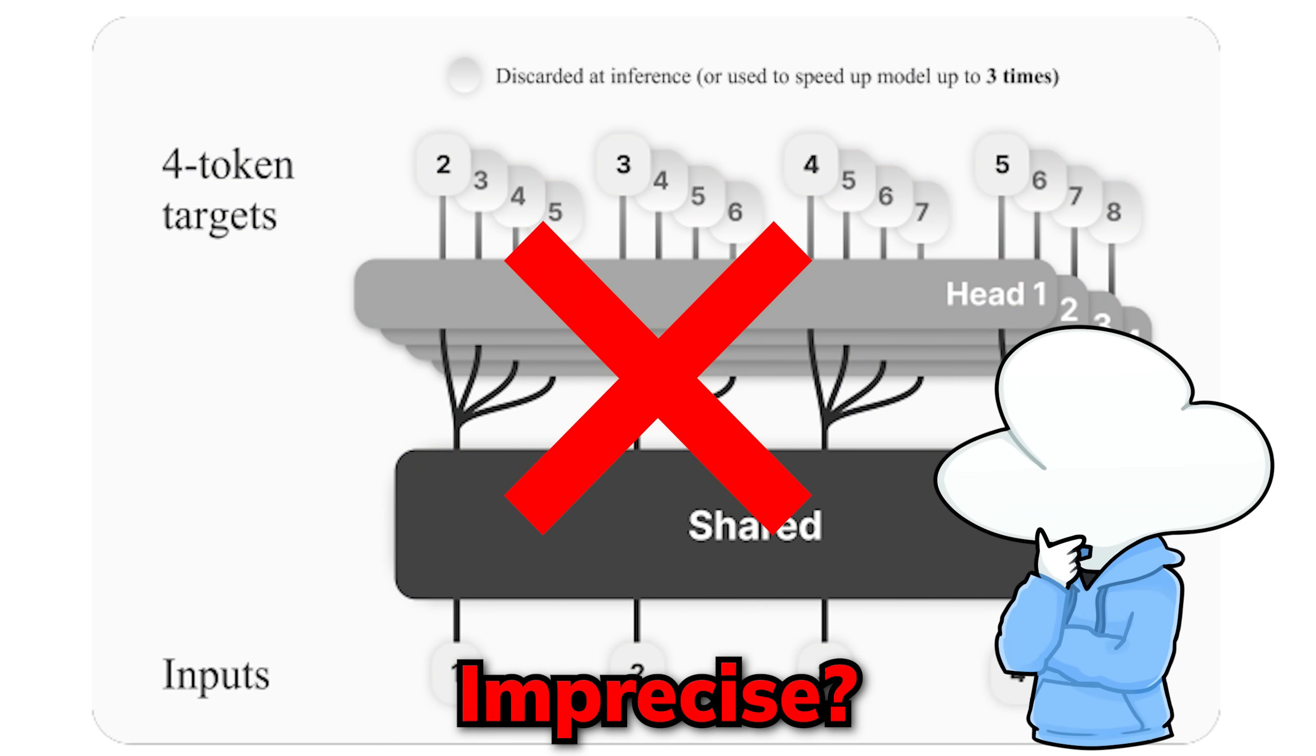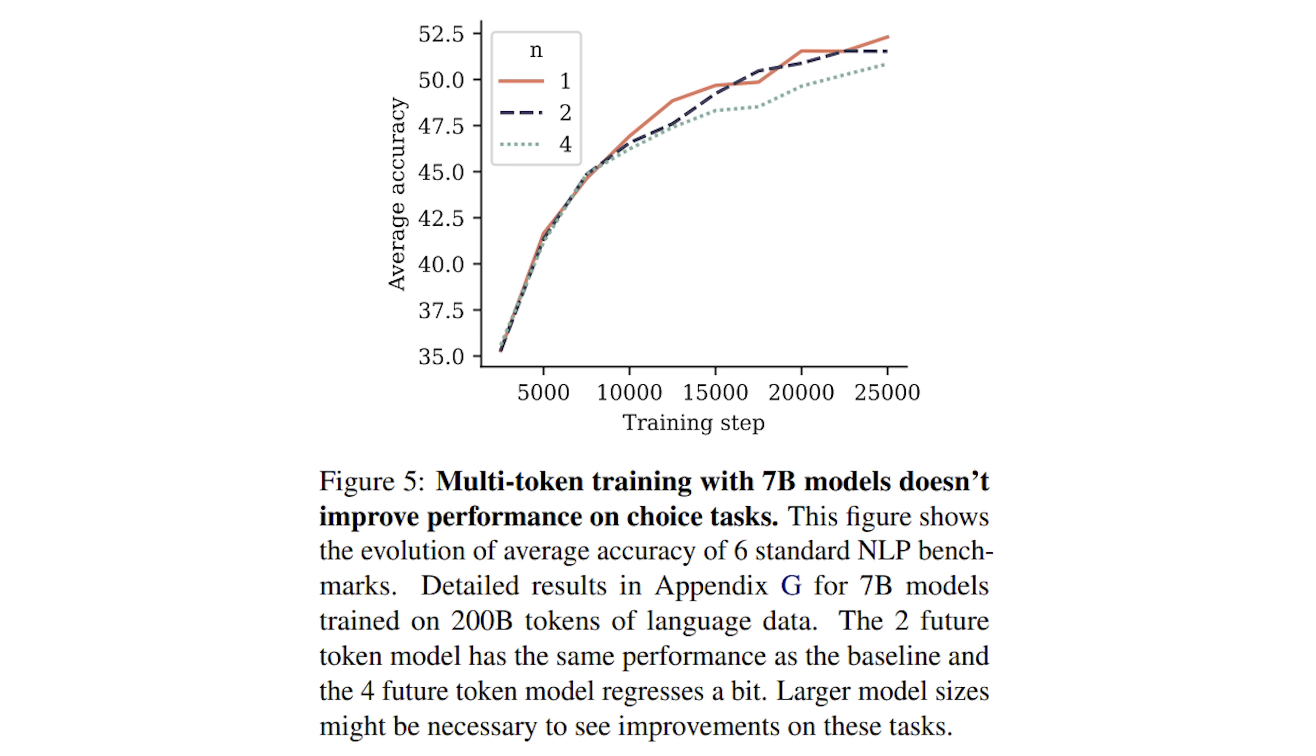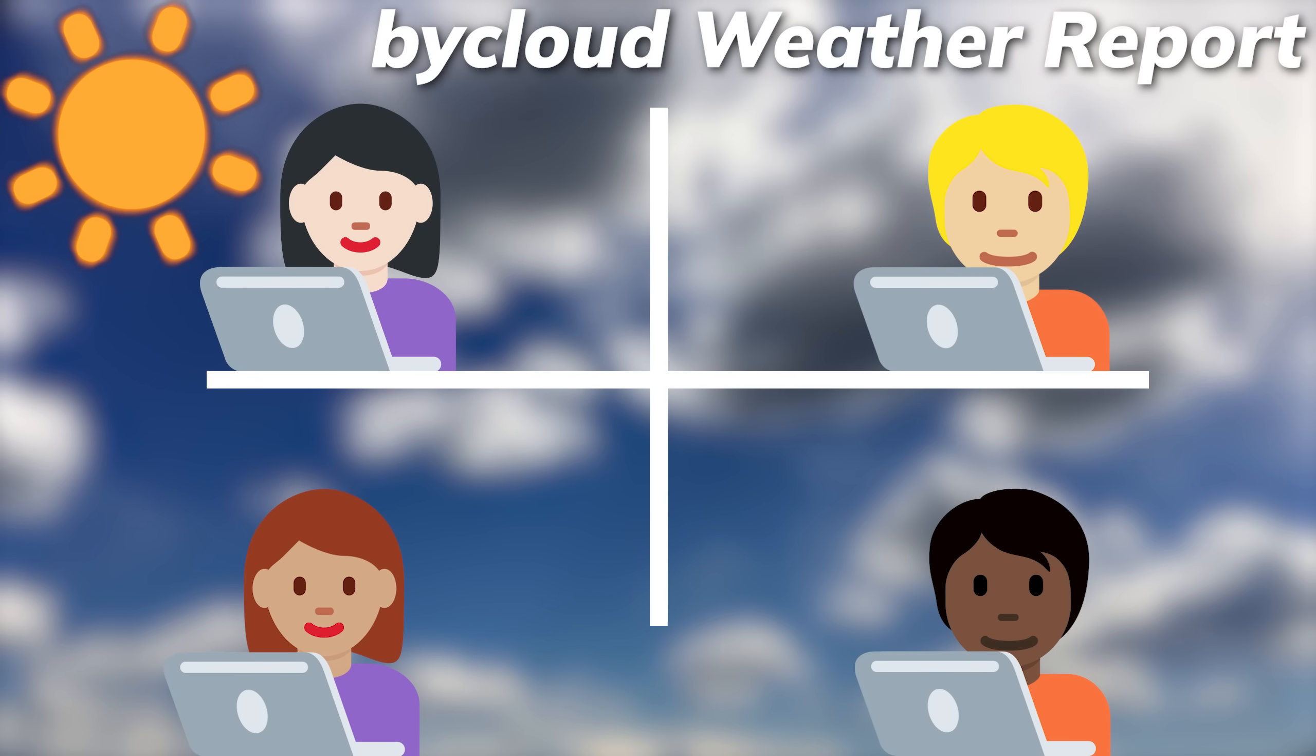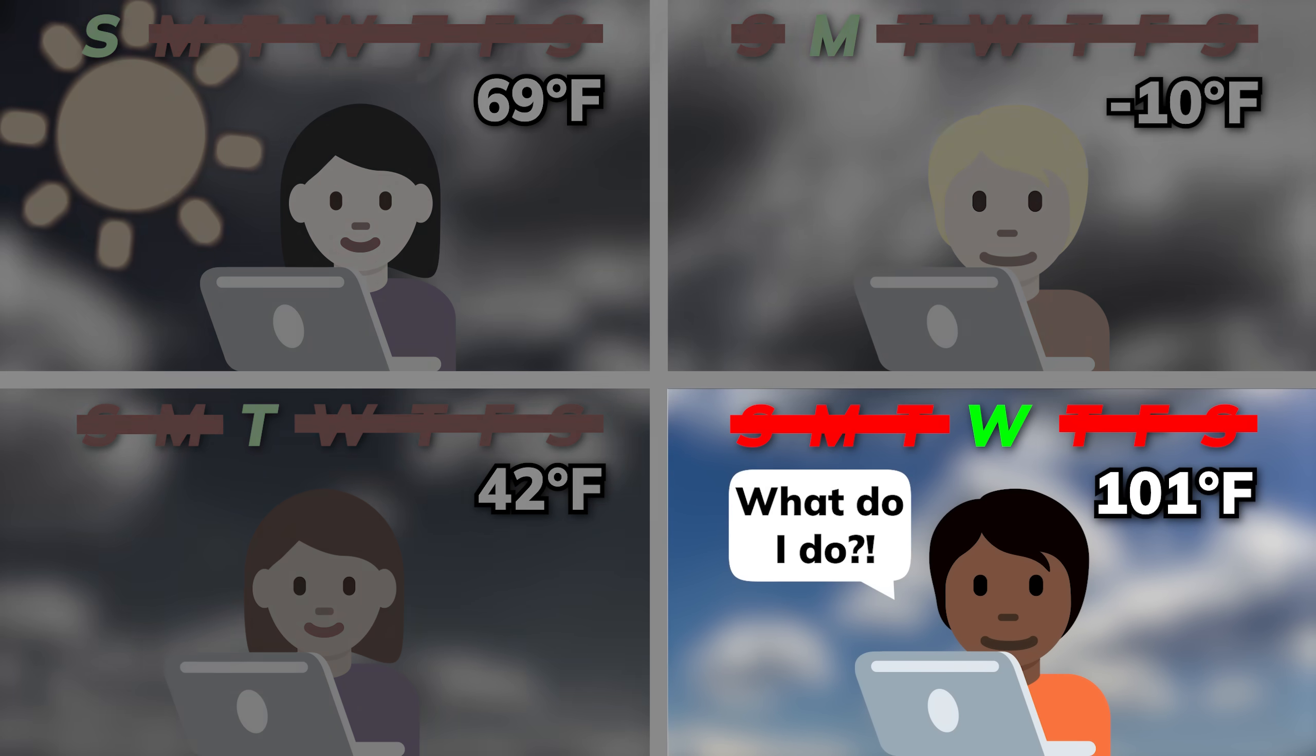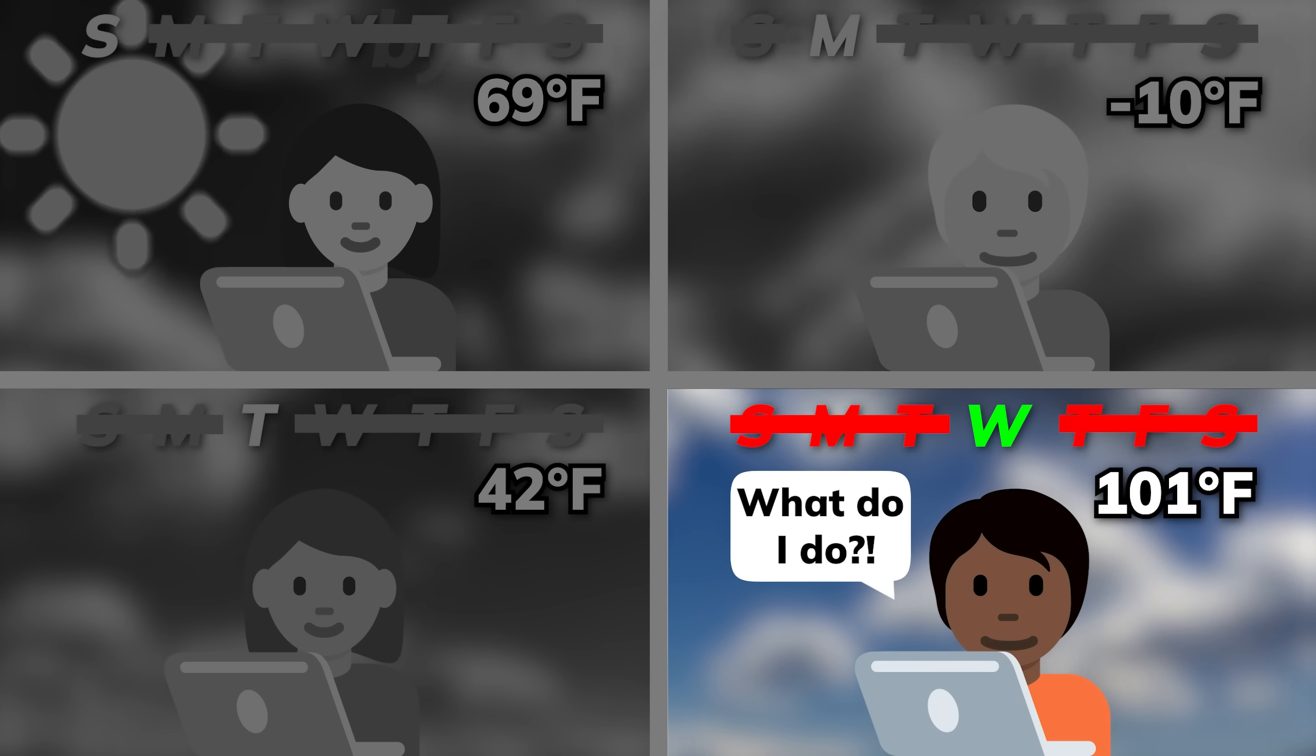But don't shotgunning tokens make the predictive process a lot more imprecise, which is the complete opposite of what we want? The research itself even says that when predicting up to four tokens at once, its performance degrades very badly. It's like having four different people doing weather reporting independently for four different days without letting them communicate with each other, which is completely the opposite of what we wanted in the first place, and doesn't sound like a safe bet at all.